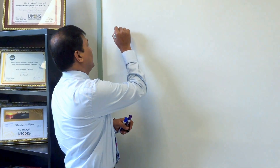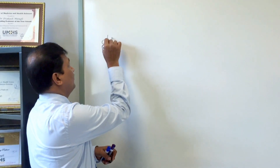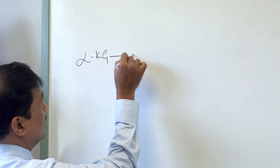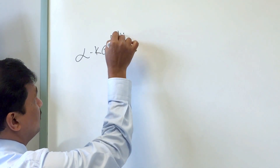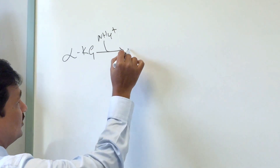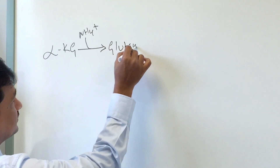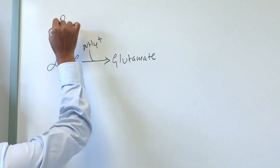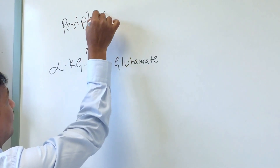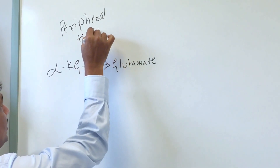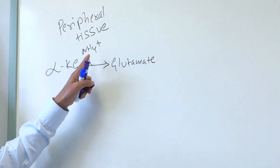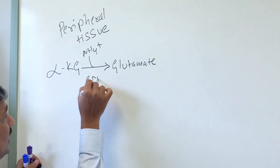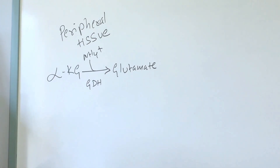In the peripheral tissue, ammonium ion is fixed to alpha-ketoglutarate — a TCA cycle intermediate. It takes up one NH4+ ammonium ion to make glutamate, synthesizing the amino acid glutamate. This reaction is carried out by the glutamate dehydrogenase enzyme.